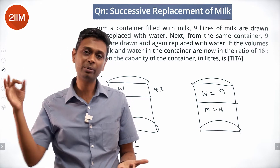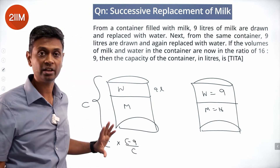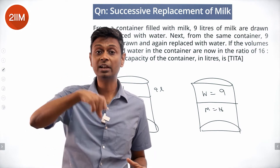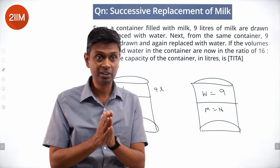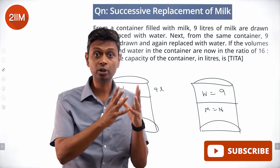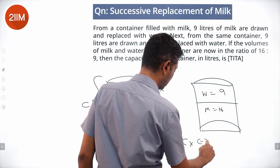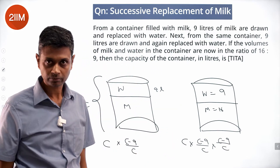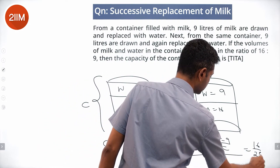Whatever is remaining will become water, so we only care about milk. From C, C minus 9 is retained; from this, C minus 9 by C is retained. That fraction C minus 9 by C is retained because we are removing 9 liters. So C minus 9 by C of whatever we start — that much milk will be there. For example, if removing half, half remains; if removing one third, two thirds remain. So milk remaining is C into C minus 9 by C into C minus 9 by C, which equals C times (C minus 9 by C) squared. This fraction of milk remaining divided by C is 16 by 25.